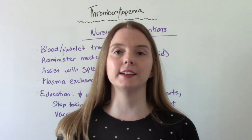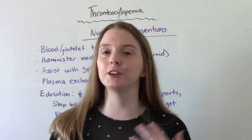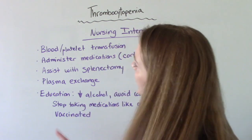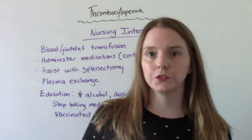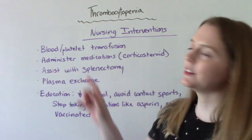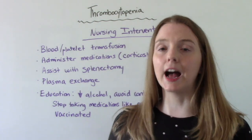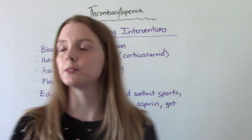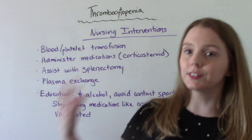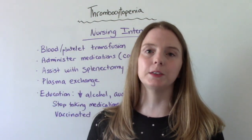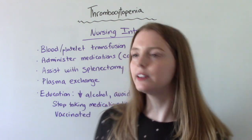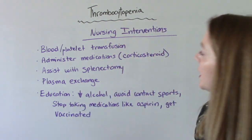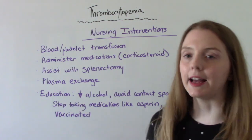When it comes to our nursing interventions and the treatment plan for our patients with thrombocytopenia, it really all depends on the cause — so we're going to treat the cause. Some potential things you might do: you might get a blood or platelet transfusion, you might have to give some medications — the common one they prescribe to start off with is corticosteroids. Worst case scenario, the spleen is going to have to be removed; that surgery is called a splenectomy.